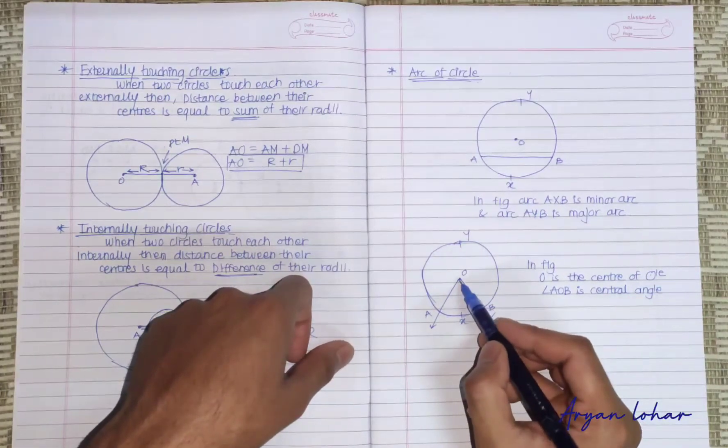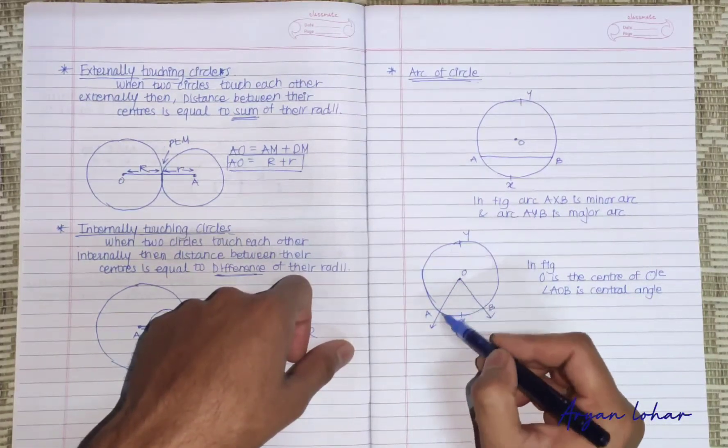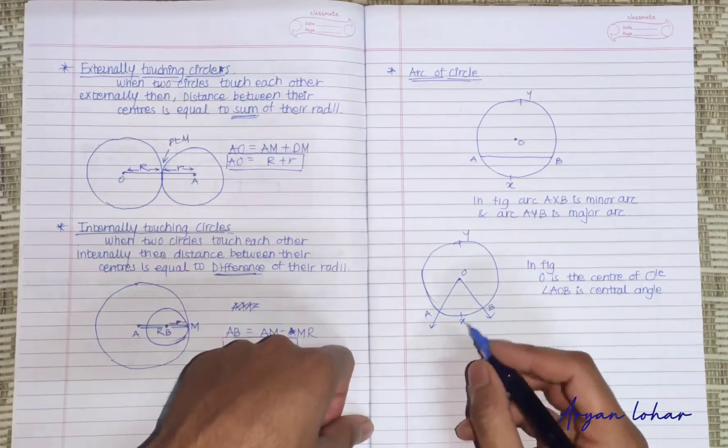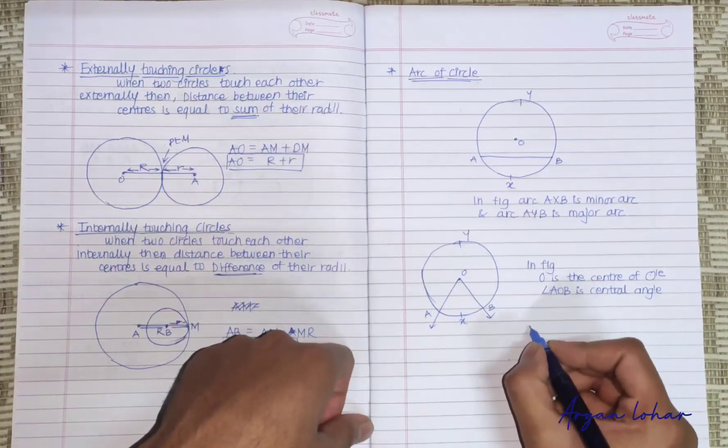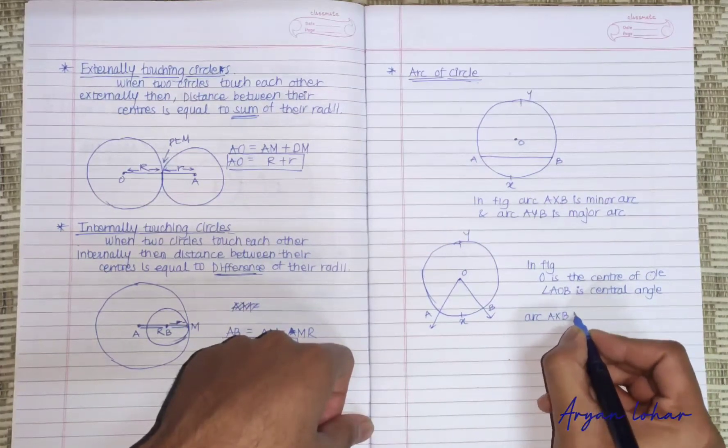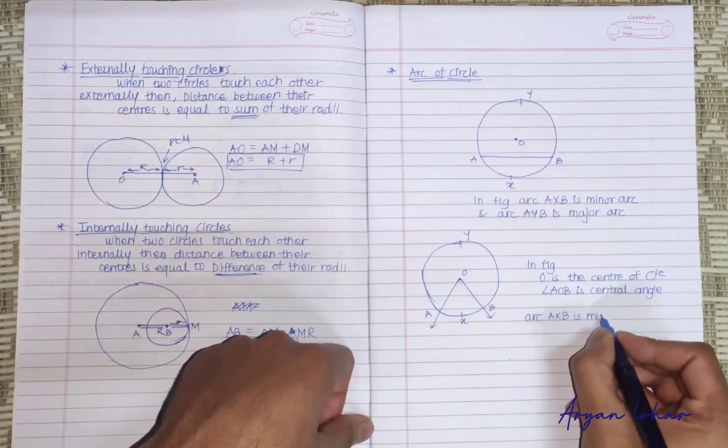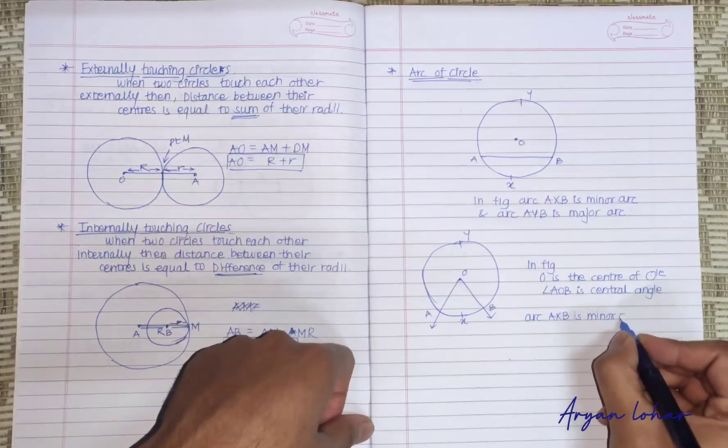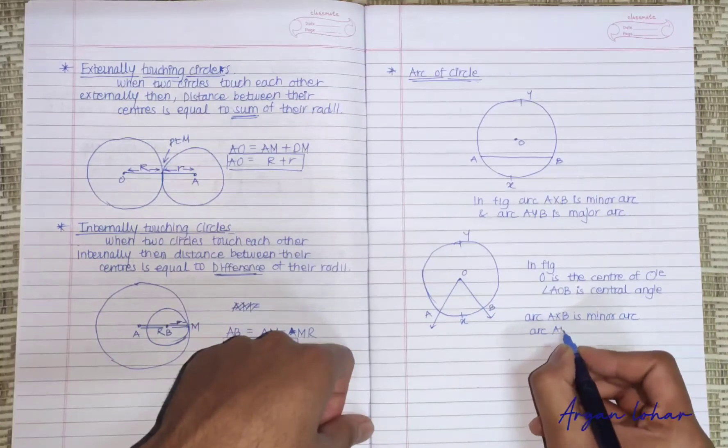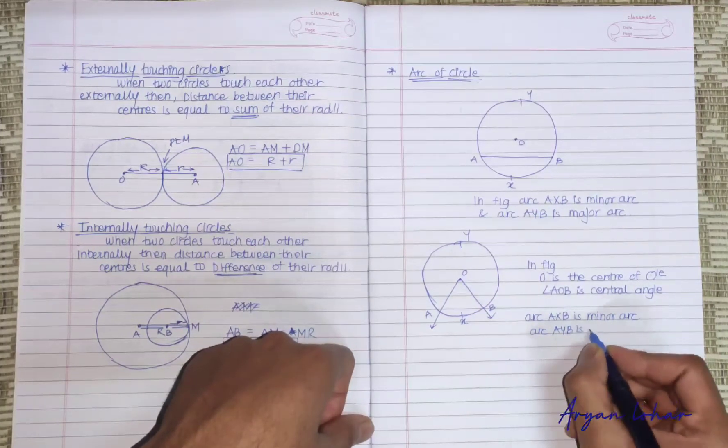The angle which is subtended from the center is known as central angle. And again, arc AXB is minor arc and arc AYB is major arc.